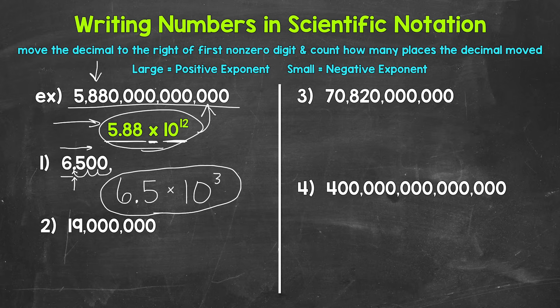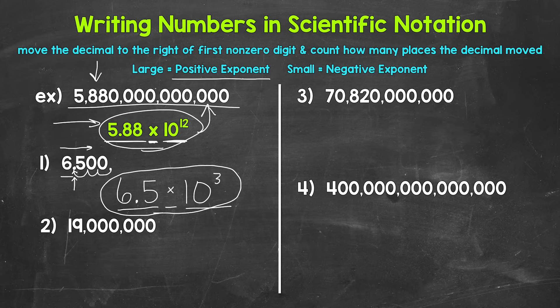So 6.5 times 10 to the power of three is equal to 6,500. We have a number greater than or equal to one, but less than 10, times a power of 10. I do want to mention that when we have scientific notation with a positive exponent, we are working with large numbers. When we have a negative exponent, we are working with really small numbers — and we will get to those next.